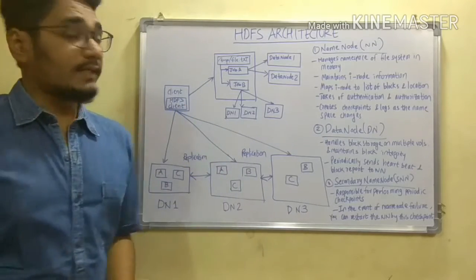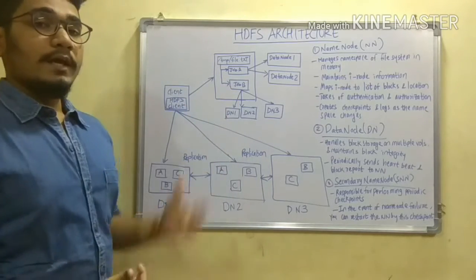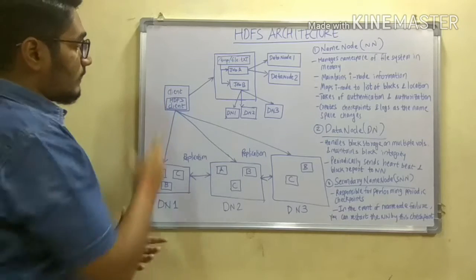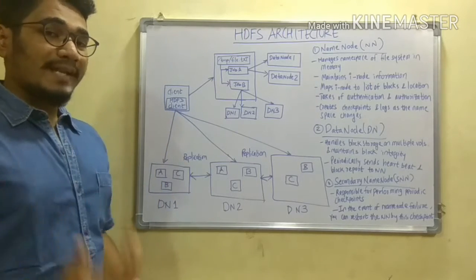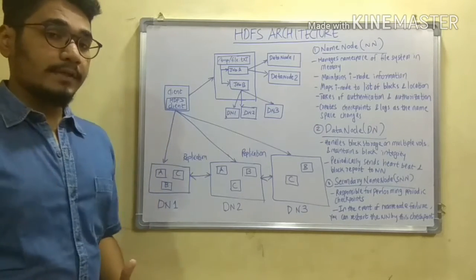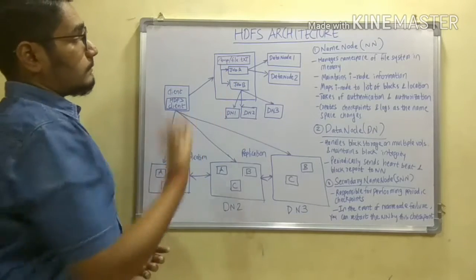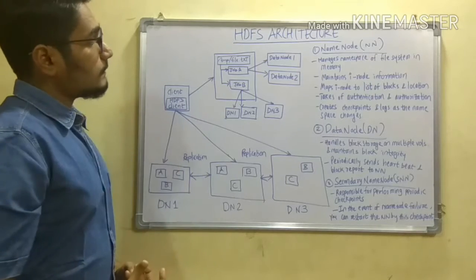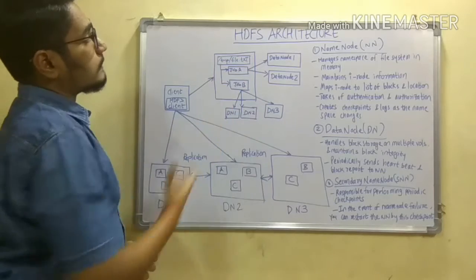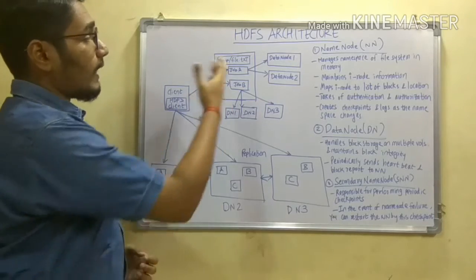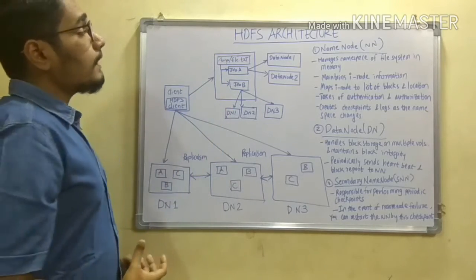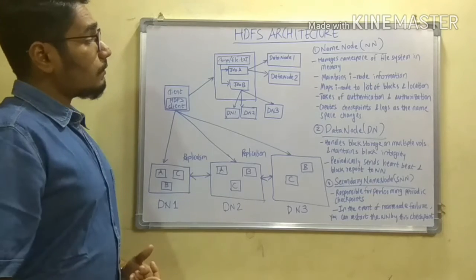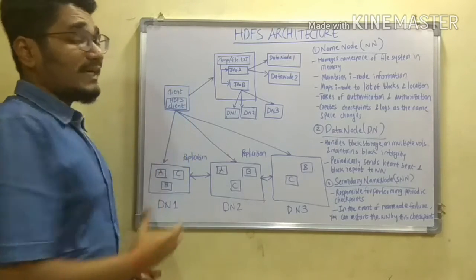This is the HDFS architecture as you can see on the left-hand side. Here, there is an HDFS client that manages all the jobs submitted to it. These jobs may be small text files in your Linux or Windows operating system — for example, stored in a path called temp, containing a file.txt. This file.txt might be a massive file of very large size.